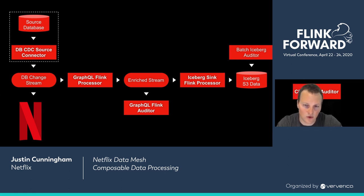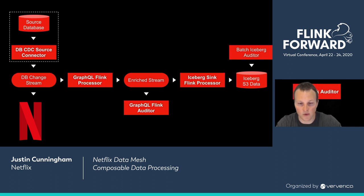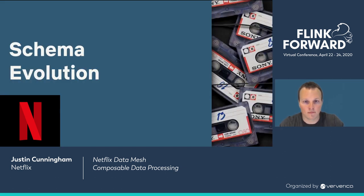One last thing I want to call out is that we deploy separate instances for every pipeline. There's a single GraphQL processor, but we deploy separate instances of it running with different configuration in each pipeline. You can think of this as a single code base in a single JAR that we're ultimately delivering, but then running a lot of copies of it depending on the individual pipeline configuration.